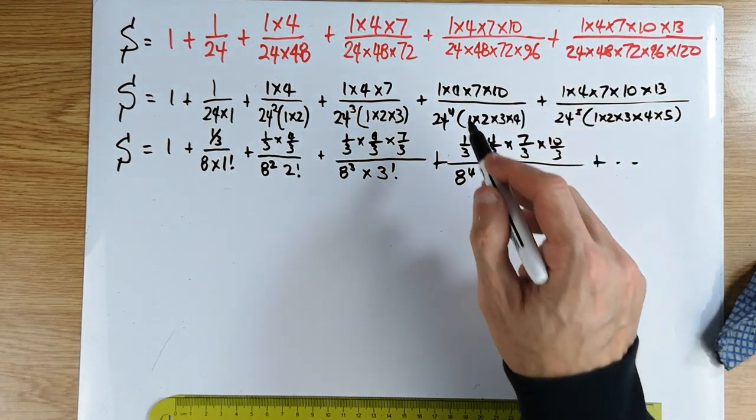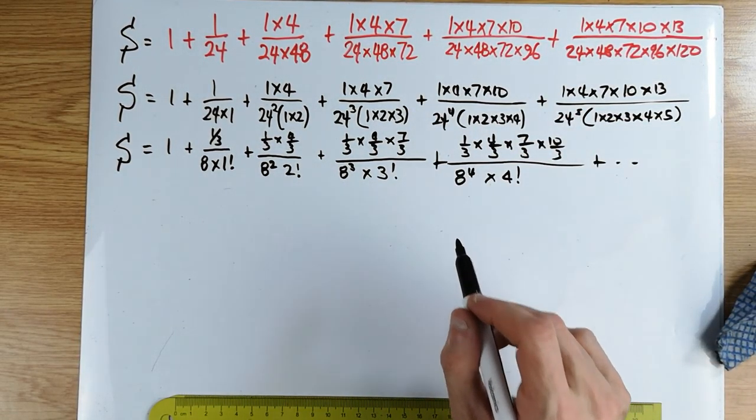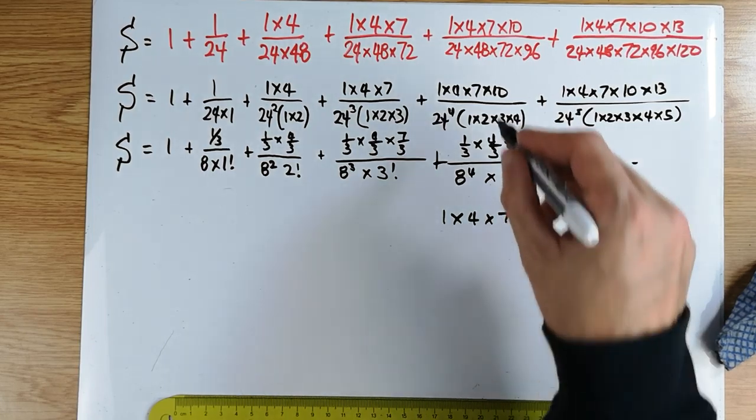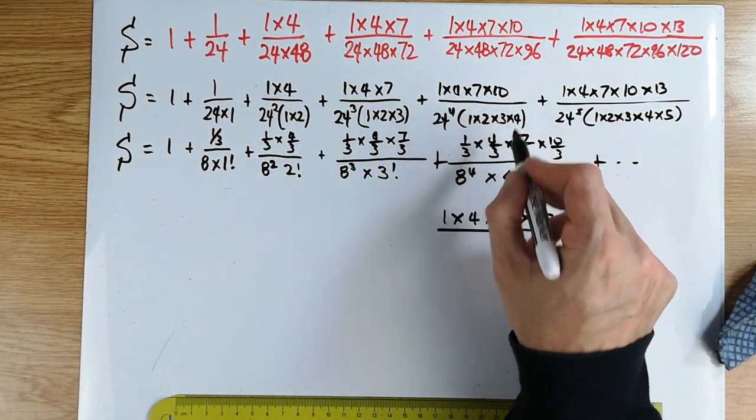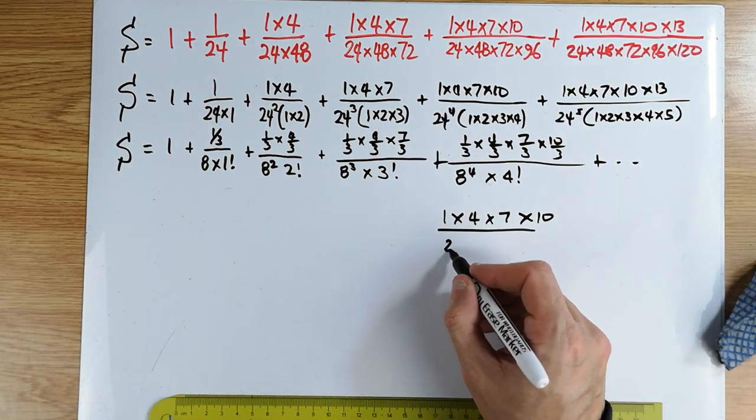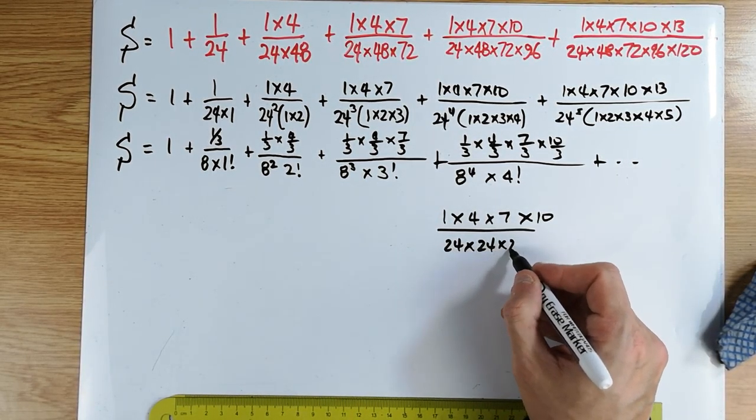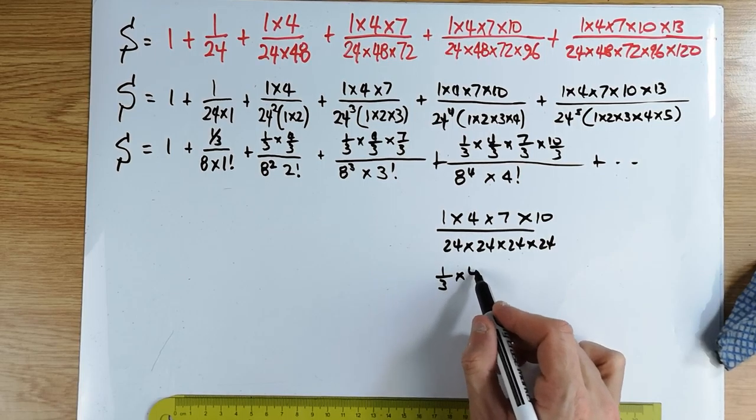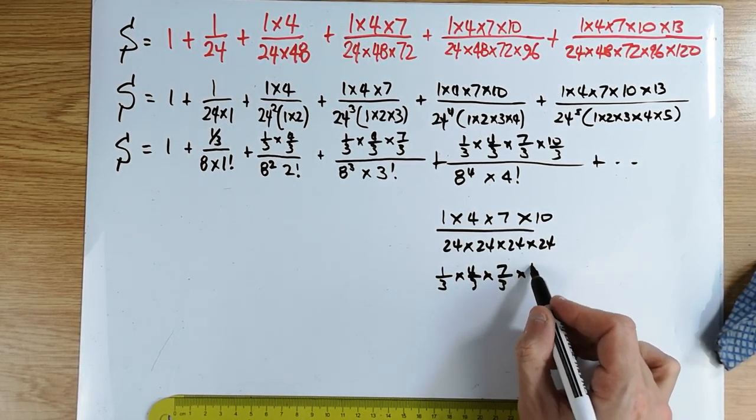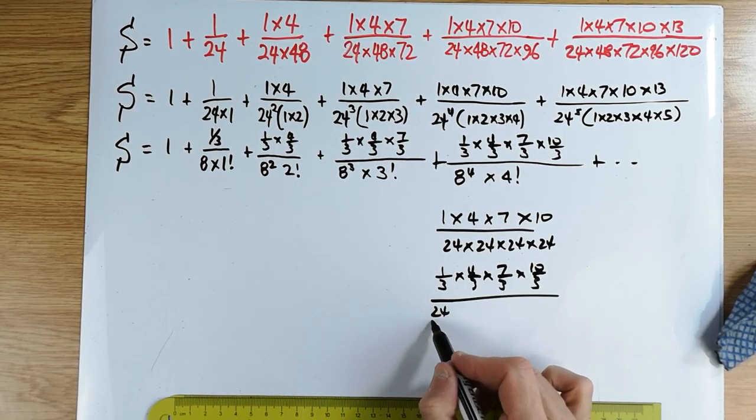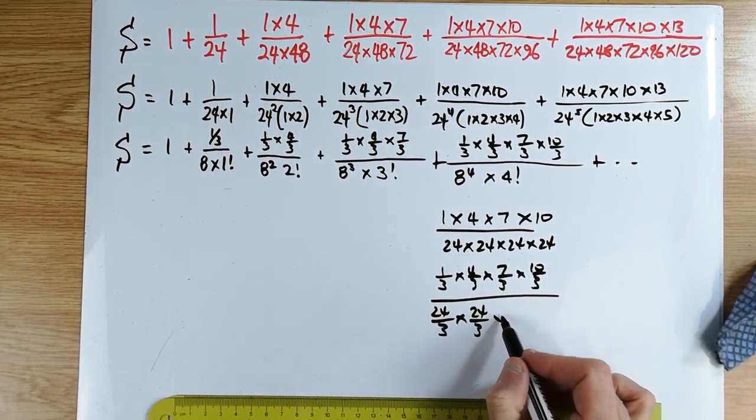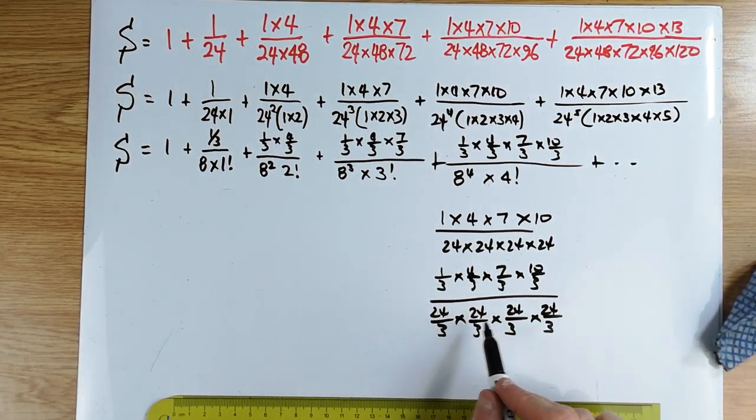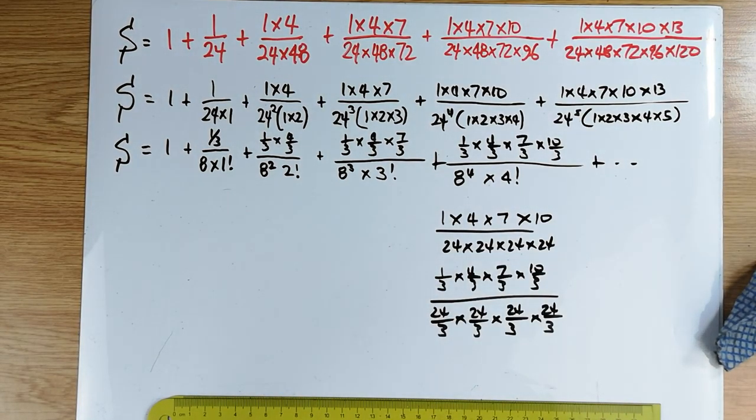I think I will not bother with this term because it's really annoying me now that I have written it. 1 3rd times 4 3rd times 7 3rd times 10 3rd and then I'm going to have an 8 to the 4 and of course a times 4 factorial plus dot dot dot. I'm not bothering with this one. And I hope we can see what I'm actually saying about dividing top and bottom by 3. I hope I'm not insulting your intelligence by actually showing you the obvious. If you look at this 1 times 4 times 7 times 10, I'm just looking at this term just to make sure we're all happy. Forget about the factorial, that's the 4 factorial there. Just look at the 24 to the 4. So it's 24 times 24 times 24 times 24.